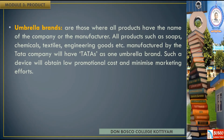Umbrella brand: these are brands where all products carry the name of the company or manufacturer. All products such as soap, chemicals, textiles, and engineering goods manufactured by the Tata company will have Tata as one umbrella brand. Such a policy will obtain low promotional cost and minimize marketing efforts.